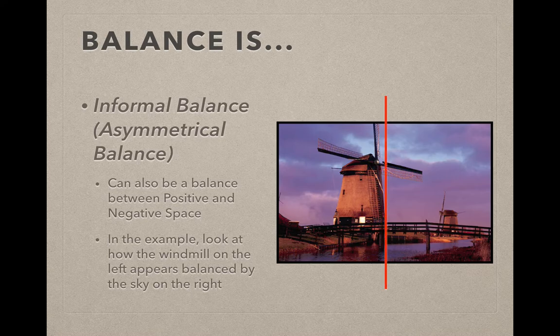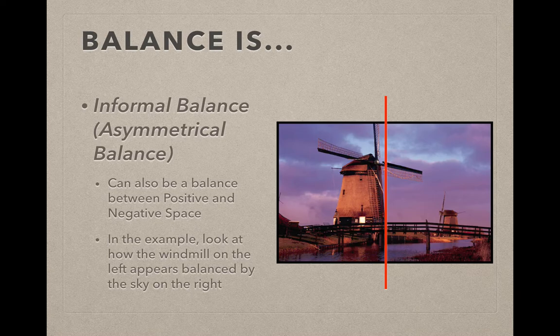If I draw a center line through that picture, everything that's taken up on the left side by the windmill is balanced by the fact that there isn't a windmill on the right. So the negative space on the right of that line balances off the positive space of the windmill on the left. I know that sounds a little confusing, but it's the way that we determine that there is still a balance there.